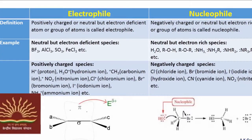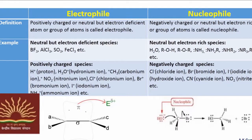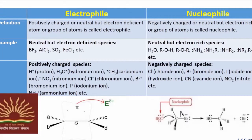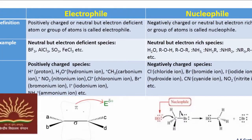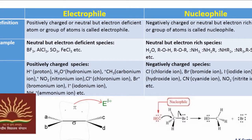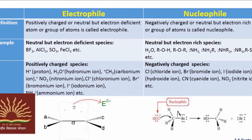There will be two types of examples of electrophiles. A category of electrophiles which are neutral but electron deficient, for example boron trifluoride, aluminum trichloride, SO3, FeCl3, etc.